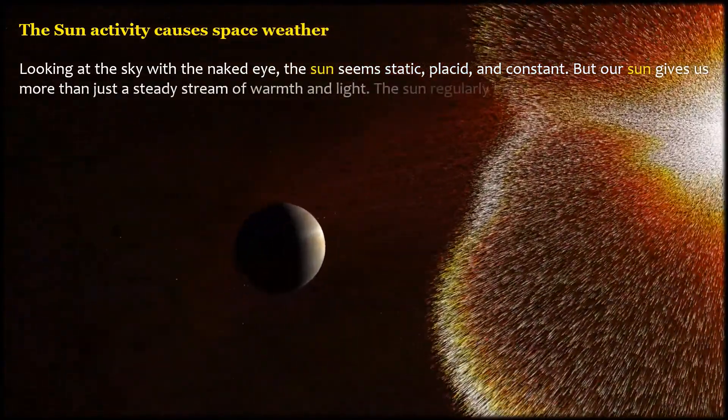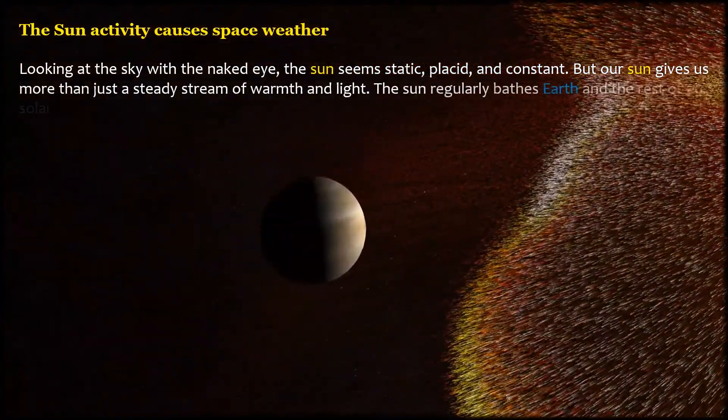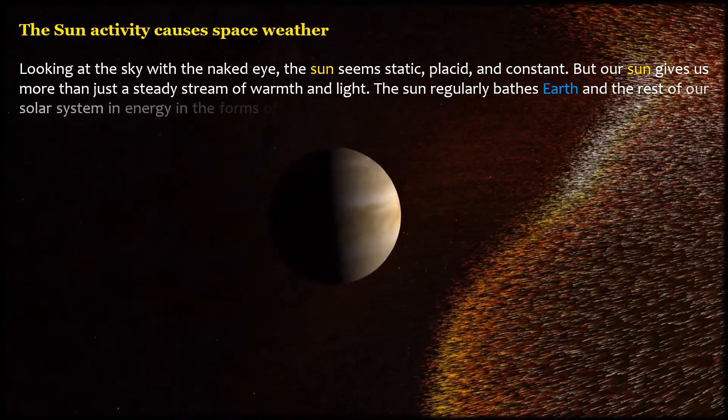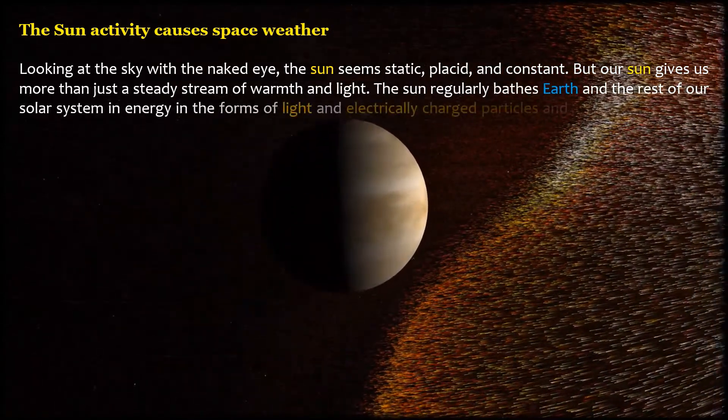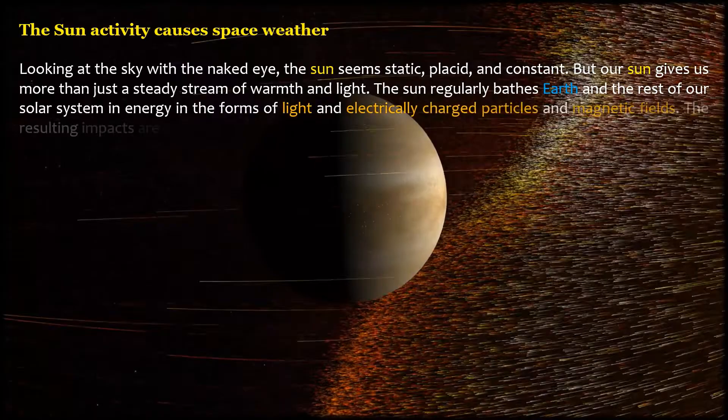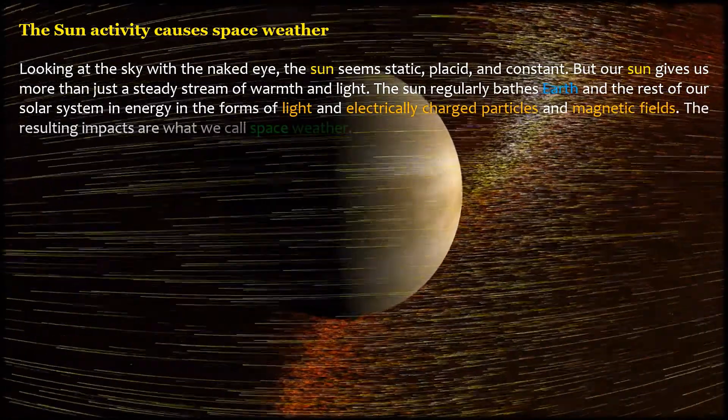The sun regularly bathes Earth and the rest of our solar system in energy in the forms of light and electrically charged particles and magnetic fields. The resulting impacts are what we call space weather.